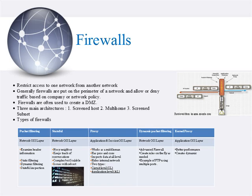The next type is dynamic packet filtering. It is like a stateful firewall but more advanced — it can rewrite rules dynamically. Some protocols, such as FTP, have complex communication requiring multiple ports and protocols. Packet and stateful filters cannot handle this easily; however, dynamic packet filters can, as they create rules on the fly as needed. Last but not least, the kernel proxy firewall, which is a fifth-generation firewall. It creates dynamic, customized network stacks when a packet needs to be evaluated, and has better performance due to packets being processed at the kernel level.